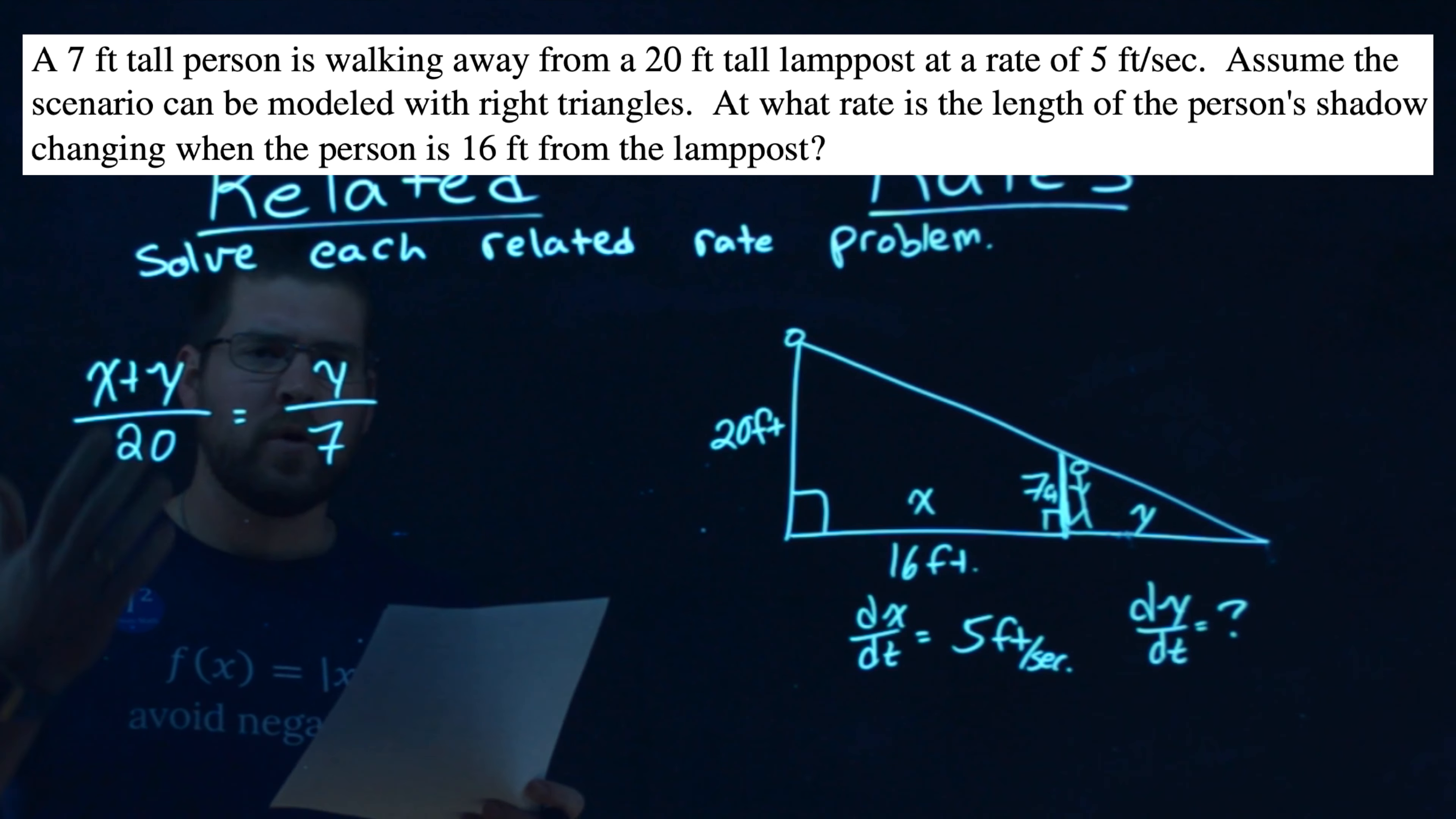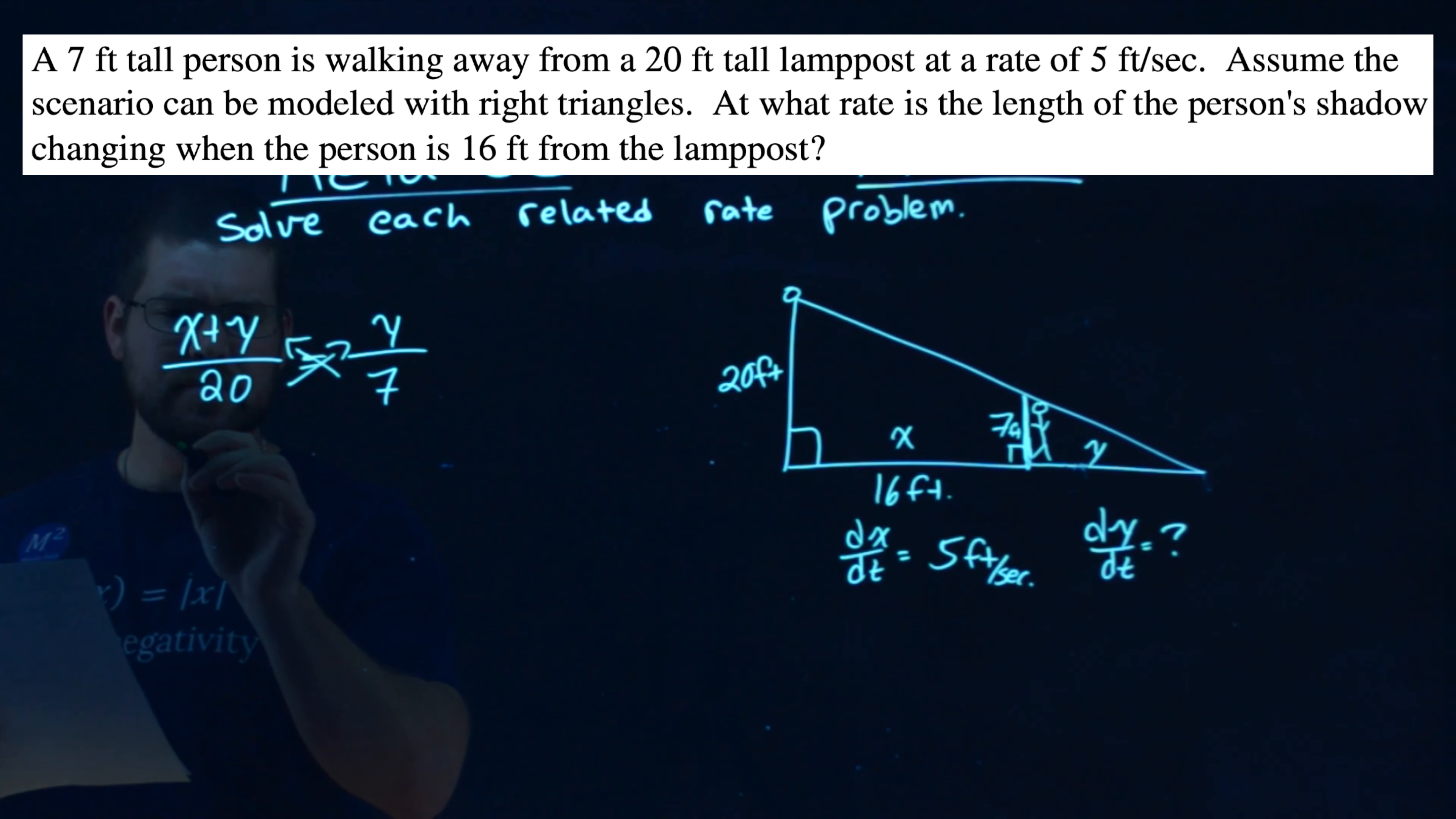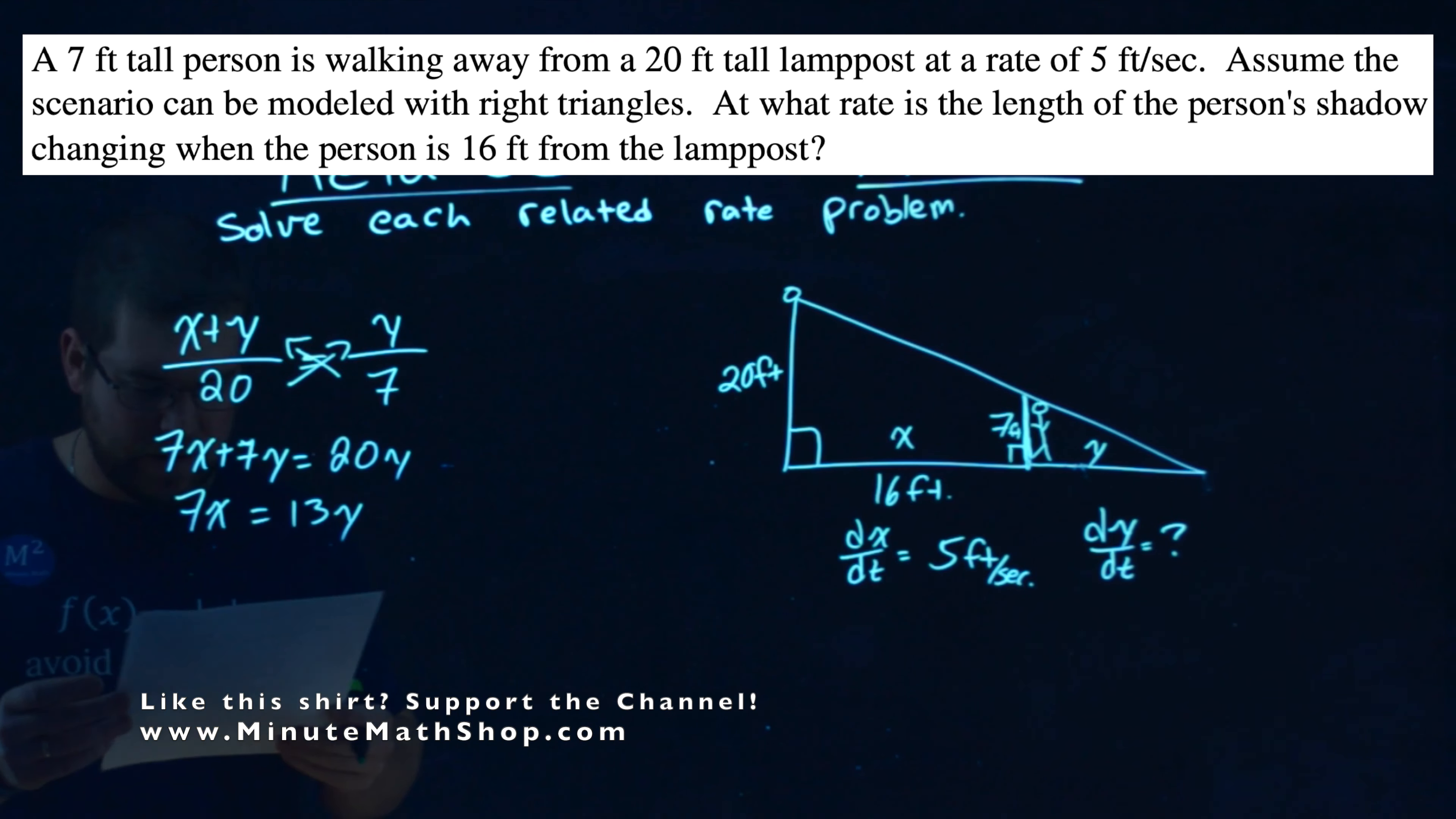Well, here's my formula. And before I dive in, deriving both sides with respect to time, let's simplify this up. Multiply 7, cross multiply here, make it easy for yourself here. And we have 7x plus 7y equals 20y. From there, subtract a 7y to both sides and 7x equals 13y right there.